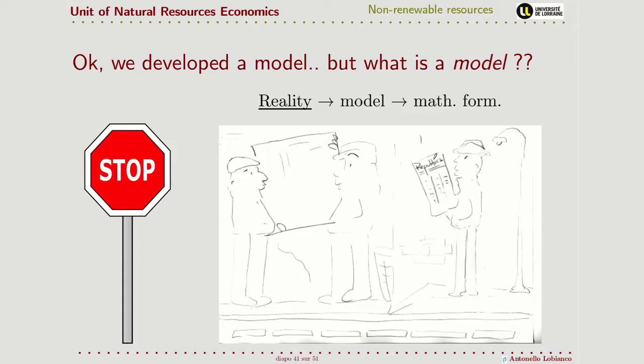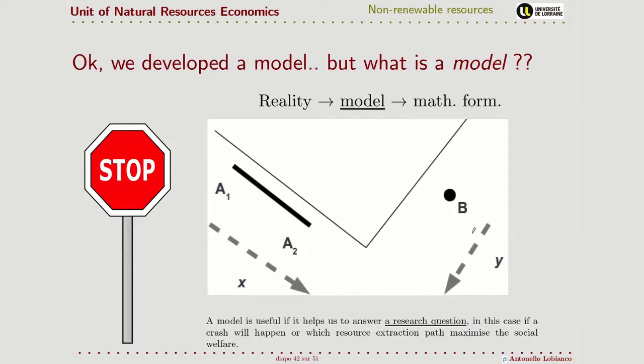It matters if, for example, we are assuming a constant speed in our model. So the fact that he's reading a newspaper, is not watching these other two guys, may be a part of the reality that we keep. We formalize this saying that the speed of this guy is constant.